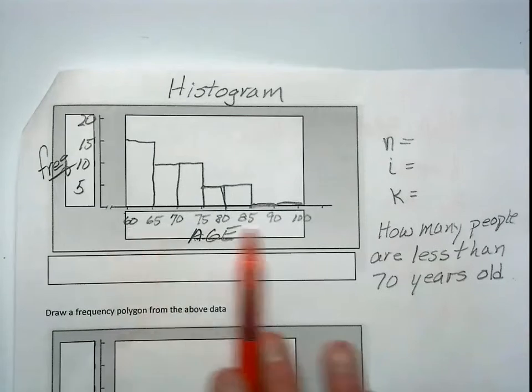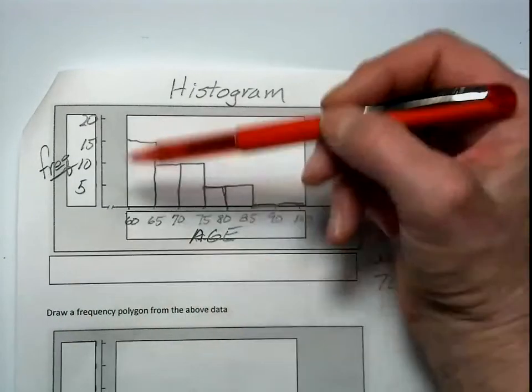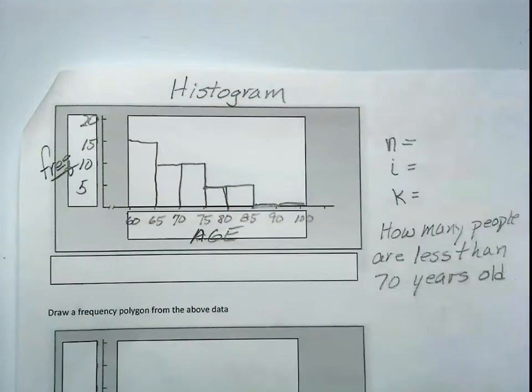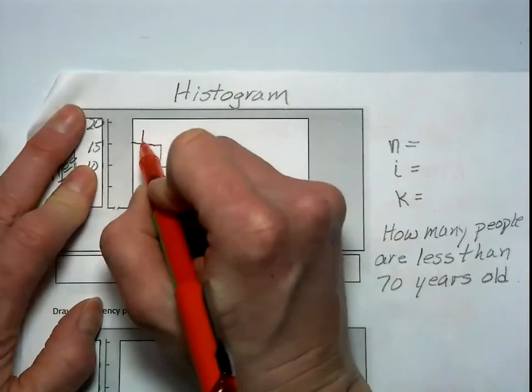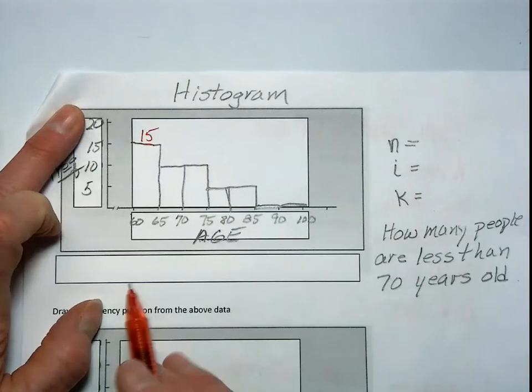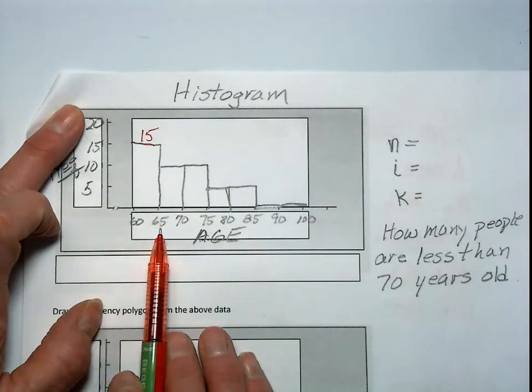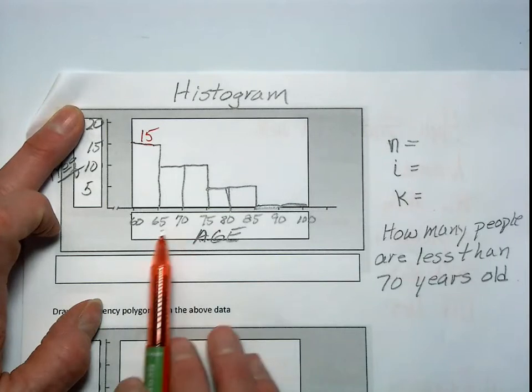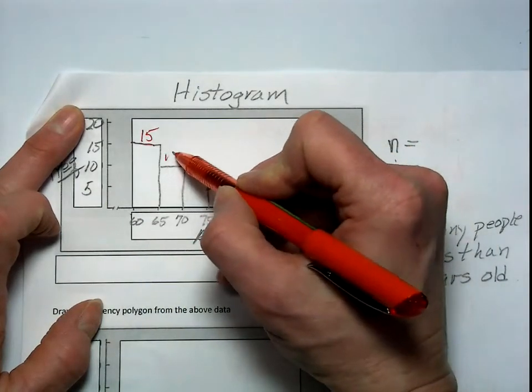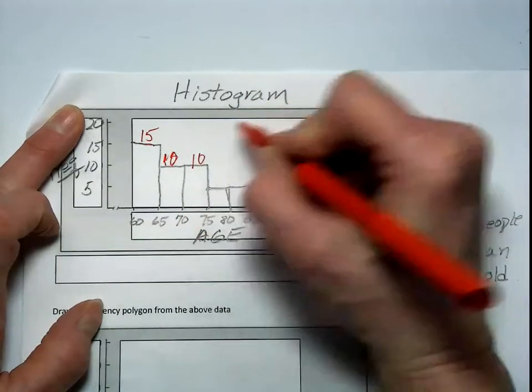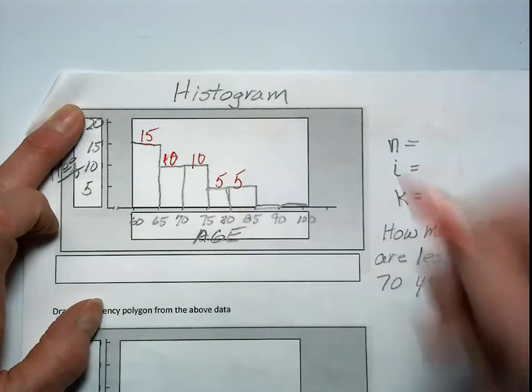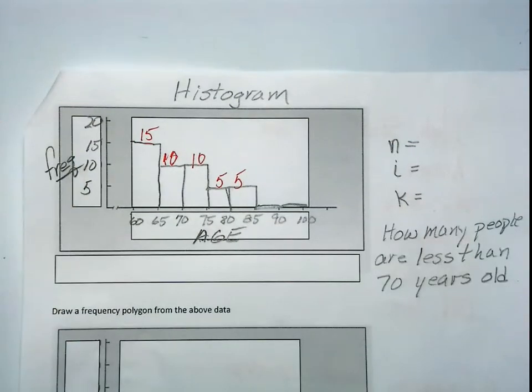This is a histogram of age, and we also have frequency. So we have 5, 10, 15, 20. This bar is up at 15, so there were 15 people between the age of 60 and 65. There were 10 people between the age of 65 and 70, then 10, 5, and 5. We did not survey any people between the age of 85 and 90 or 90 and 100.